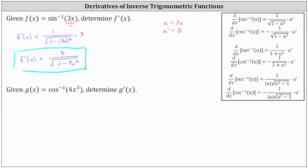Looking at our second example, we are given g of x equals inverse cosine of 4x cubed and asked to determine g prime of x. Once again, notice we do have a composite function where the inner function u is now 4x cubed. So if u is equal to 4x cubed, then u prime is equal to 12x squared.